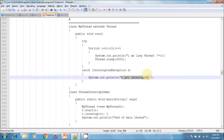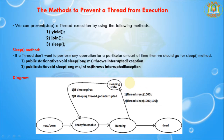Whenever we are calling the interrupt method, we may not see the effect immediately. If the target thread is in sleeping or waiting state, it will be interrupted immediately. If the target thread is not in sleeping or waiting state, then the interrupt call will wait until the target thread enters the sleeping or waiting state. Once the target thread enters the sleeping or waiting state, it will affect immediately.